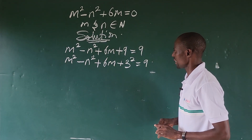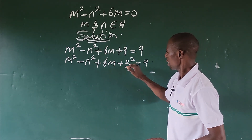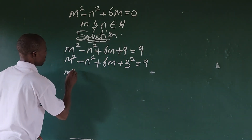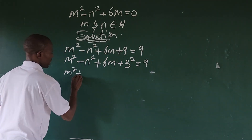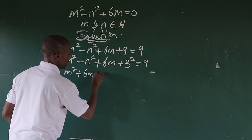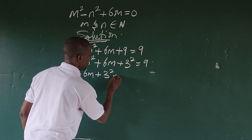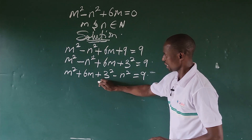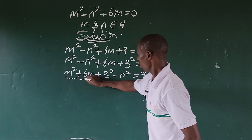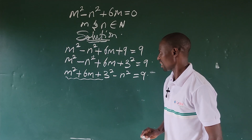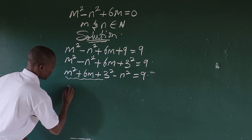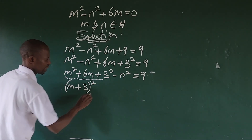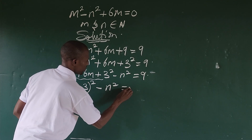Now let's see if we can bring out a special algebraic identity from here. Bringing these terms together: m² plus 6m plus 3² minus n² equals 9. We can combine m² plus 6m plus 3² into a perfect square, giving us (m + 3)² minus n² equal to 9.